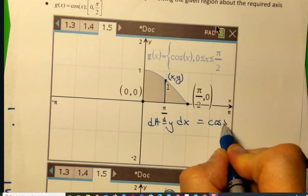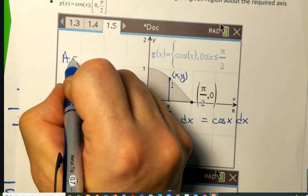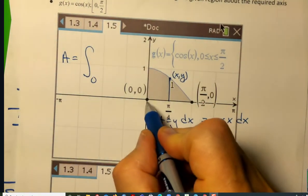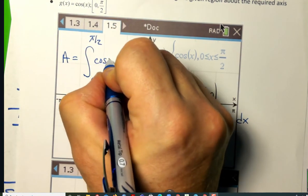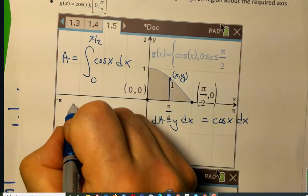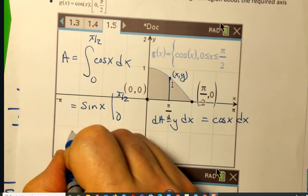But what is y? It's the cosine of x. So my area of my region is the integral from 0 to pi over 2 of the cosine of x dx, which is the sine of x evaluated on this interval.